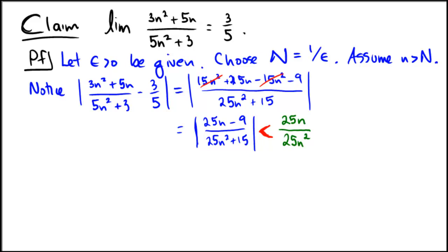Okay, back in the blue, so that was the jump that I had to make there, but now notice that this is just the same as, well, 25s cancel, ns cancel, so it's really just 1 over n.